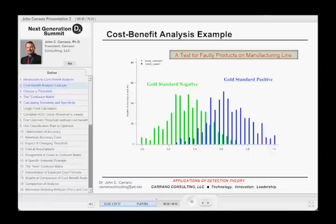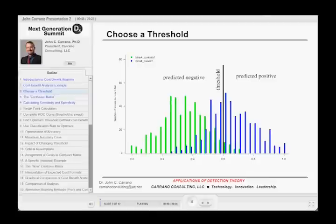So here I've got a histogram that shows a gold-standard negative or true negative population and some gold-standard positive or true positive population, just like what we've seen before. And right now, I'm just going to arbitrarily choose some threshold to operate at, and I happen to choose this point right here.